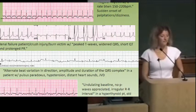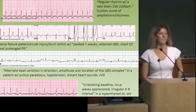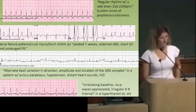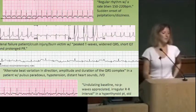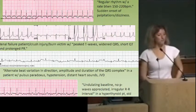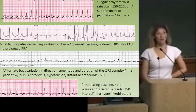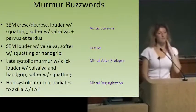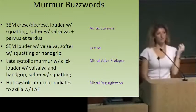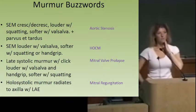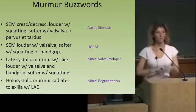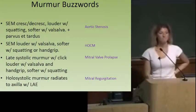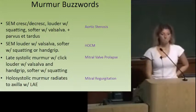Now let's go to murmurs — the other common question type in cardiology. A systolic murmur that's crescendo-decrescendo, louder when they squat, softer with Valsalva, and you might see parvus et tardus in their pulses when palpating — that's aortic stenosis.